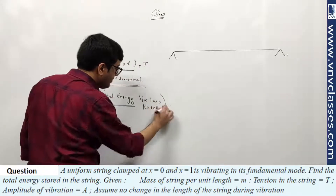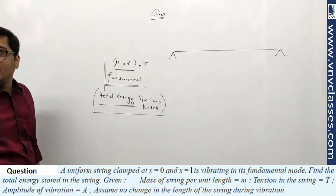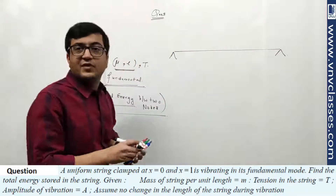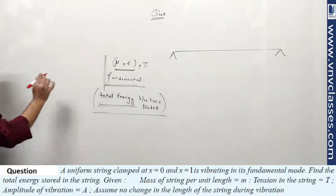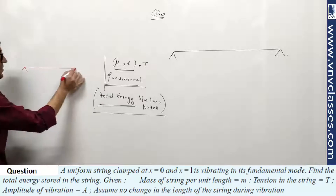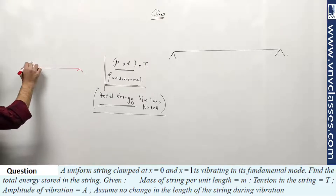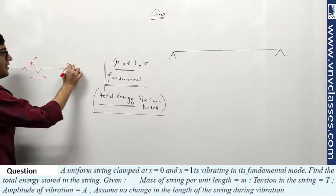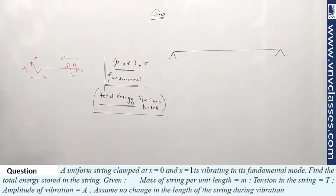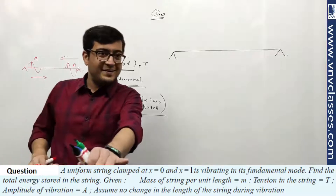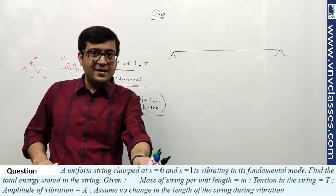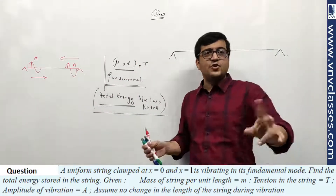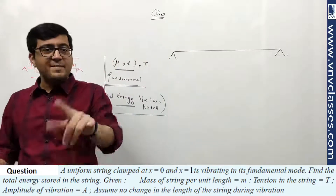In fundamental mode there will be only two nodes. In standing waves, energy is constant. I am taking the assumption that the amplitude of the traveling wave is 'a'. Both traveling waves have amplitude 'a', so the standing wave's antinode amplitude will be 2a. If the question says the standing wave amplitude is 'a', then the two traveling waves that superpose to form it each have amplitude a/2.